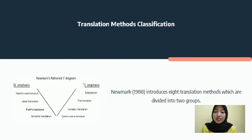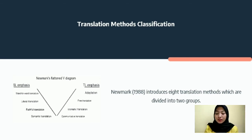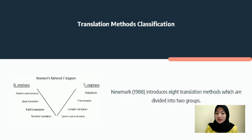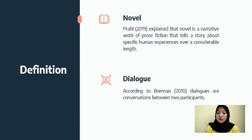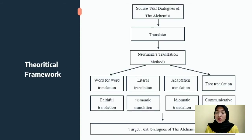This is the translation methods classification by Newmark, presented as a V diagram. Newmark introduced eight translation methods divided into two groups: the first group emphasizes source language (SL), and the second emphasizes target language (TL). Next, we discuss the definition of novel, the definition of dialogue, and the theoretical framework of this research.